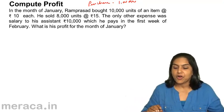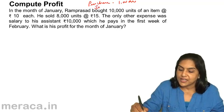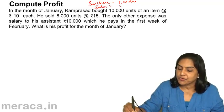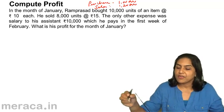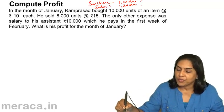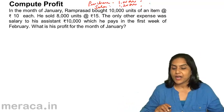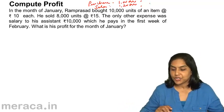Then he sold 8,000 units for rupees 15 each. Therefore the sales is 8,000 into 15, which comes to 1 lakh 20,000. So we have purchases of 1 lakh and sales of 1 lakh 20,000 in this situation.